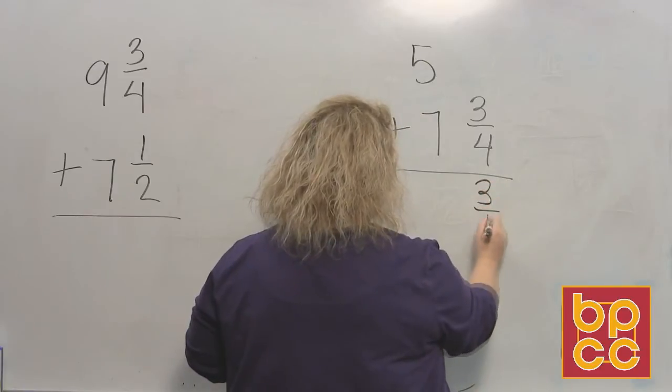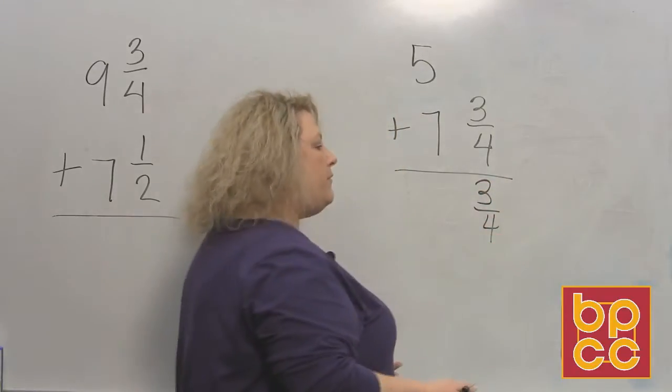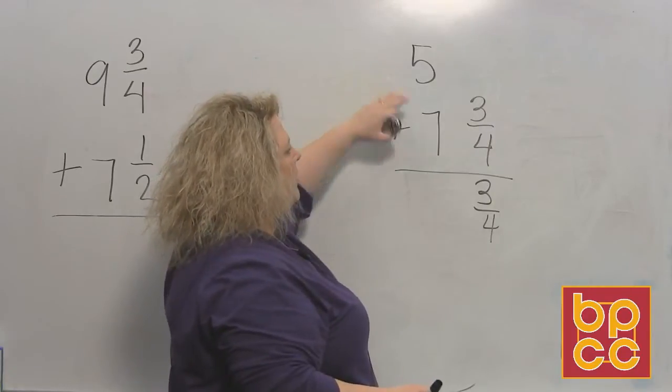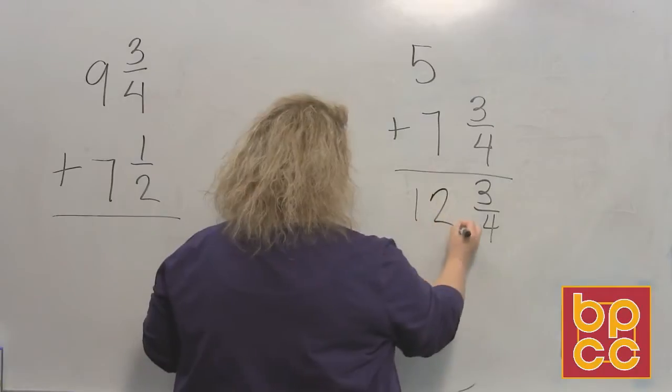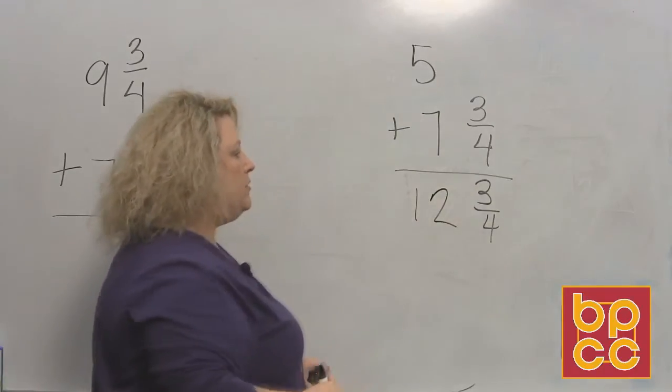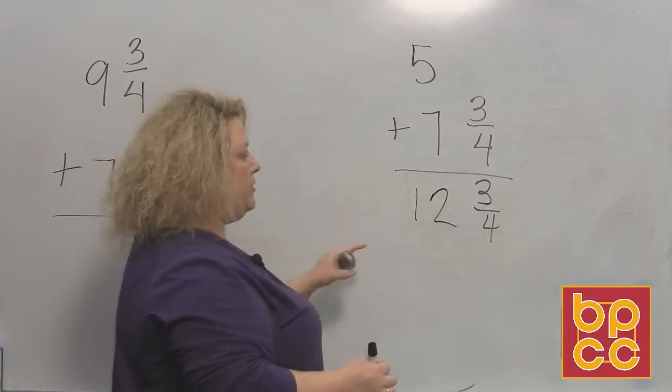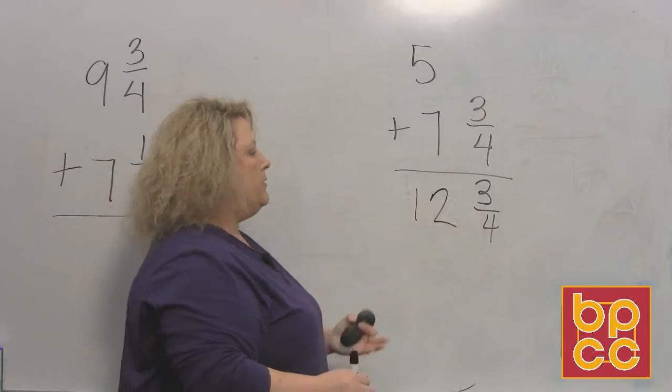Since it doesn't have a fraction, the three-fourths I can just bring down because there's nothing for me to add it to. All I have to worry about is 5 plus 7. Five plus seven makes 12, so that is 12 and three-fourths. I'm done with that. I can't reduce the fraction in any way, so that's it.